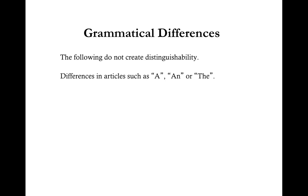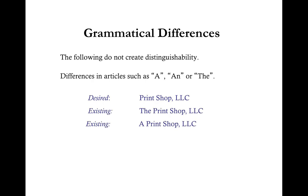Differences in articles such as a, an, or the do not create distinguishability. For example, if your desired LLC name is Print Shop LLC, and during your search you find The Print Shop LLC or A Print Shop LLC, these names are all the same in the eyes of the state and your desired name would not be available. An alternative name would be Printing Solutions LLC.